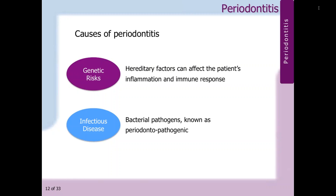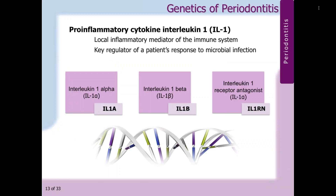Periodontitis is an infectious disease caused by bacterial pathogens known as periodontal pathogens. The pro-inflammatory cytokine interleukin-1, known as IL-1, is a local inflammatory mediator of the immune system and a key regulator of the patient's response to microbial infection. When IL-1 is overproduced, hyperactivation of osteoclasts occurs, causing aggressive resorption of bone tissue. Therefore, certain variations of IL-1 genes are associated with an increased susceptibility to more severe symptoms. IL-1A and IL-1B are genes that code for subunits of IL-1, which are IL-1-alpha and IL-1-beta, respectively.